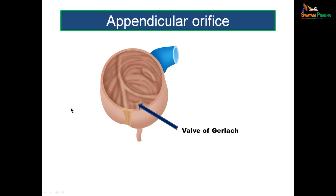The appendicular orifice is about 2 centimeters below the ileocecal orifice in the posterior medial wall of the cecum. It is guarded by a semilunar fold of mucous membrane called the valve of Gerlach, which is just a mucosal fold without much functional significance.